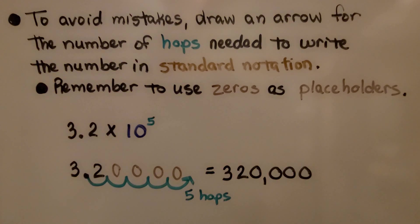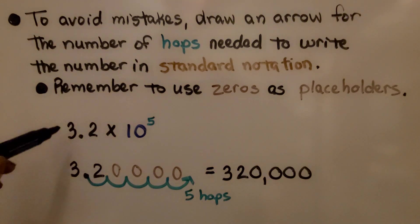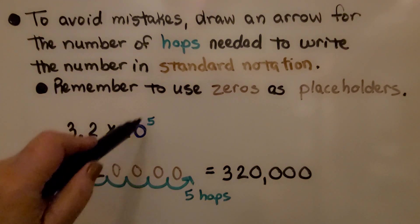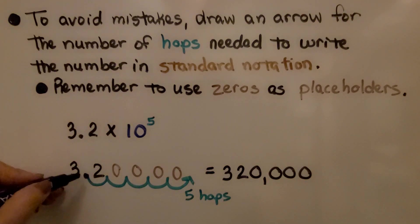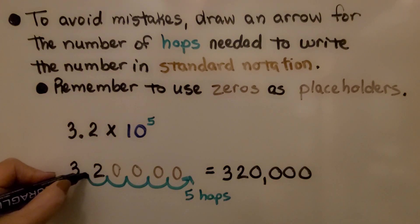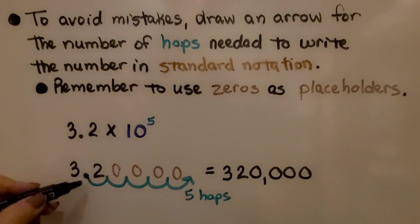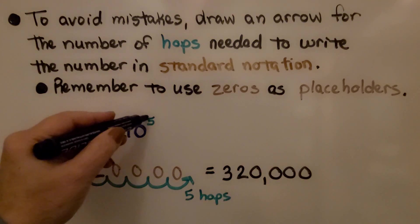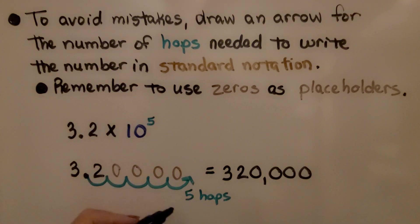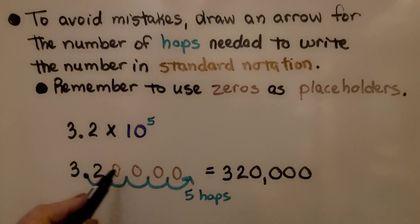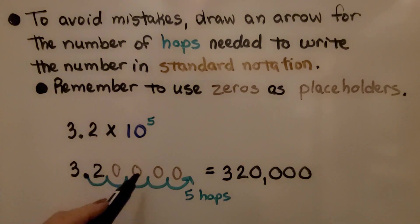To avoid mistakes, draw an arrow for the number of hops needed to write the number in standard notation, and remember to use zeros as placeholders. We have 3.2 times 10 raised to the fifth power. We move the decimal point five places to the right — five hops — because we have a positive 5. We use four placeholder zeros and get 320,000 in standard notation.